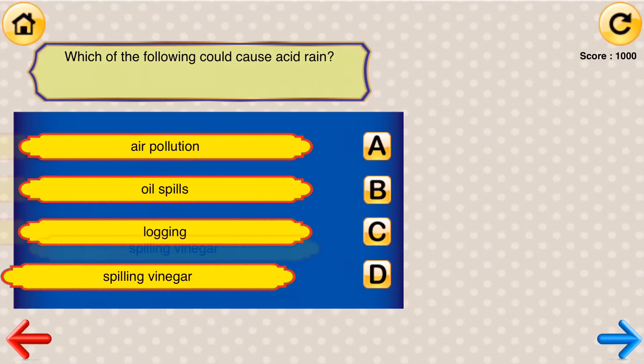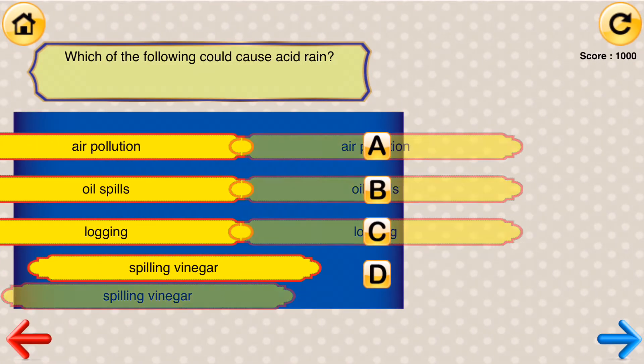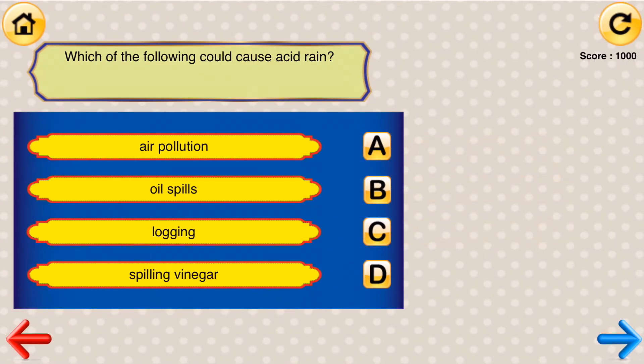Which of the following could cause acid rain? Air pollution. Oil spills. Logging. Spilling vinegar.